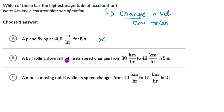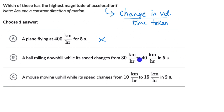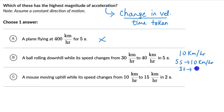In the second option, a ball rolling downhill with its speed changing from 30 to 40 kilometers per hour in five seconds. Since the direction is constant, we can treat velocity change as speed change. The change in speed is 40 minus 30, which is 10 kilometers per hour, happening in five seconds. So in one second the change is 2 kilometers per hour — acceleration is 2 km/h per second.